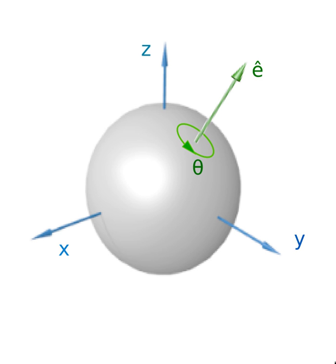As in two dimensions, a matrix can be used to rotate a point. The matrix used is a 3×3 matrix with entries a, b, c, d, e, f, g, h, i. This is multiplied by a vector representing the point to give the result.